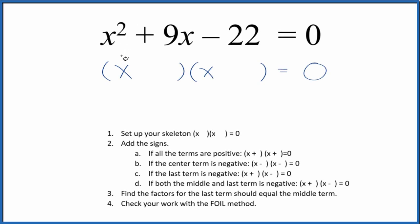Okay. Let's factor the equation x squared plus 9x minus 22. We'll start with a skeleton equation. Once we have that skeleton, we can add the signs into the skeleton equation.